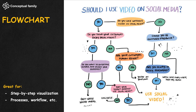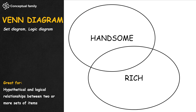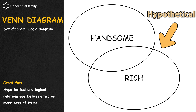A more complicated version of the Sankey diagram is the alluvial chart, where there are more than two stages through which the dataset flows. A flowchart is a diagram that depicts subsequent steps in a process.